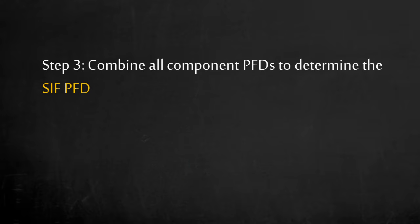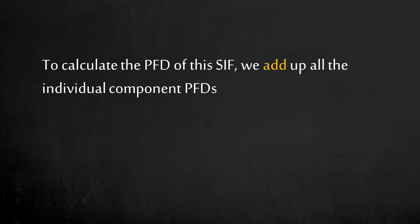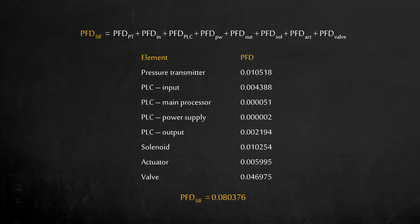Step 3. We need to determine the safety instrumented function's PFD as a whole. How do we integrate them to reflect the entire function? It's simple. For our example, the PFD of the entire safety instrumented function is just a summation of each component PFD. This only applies if there is no redundancy. The probability of failure on demand of the entire safety instrumented function is 0.080376.